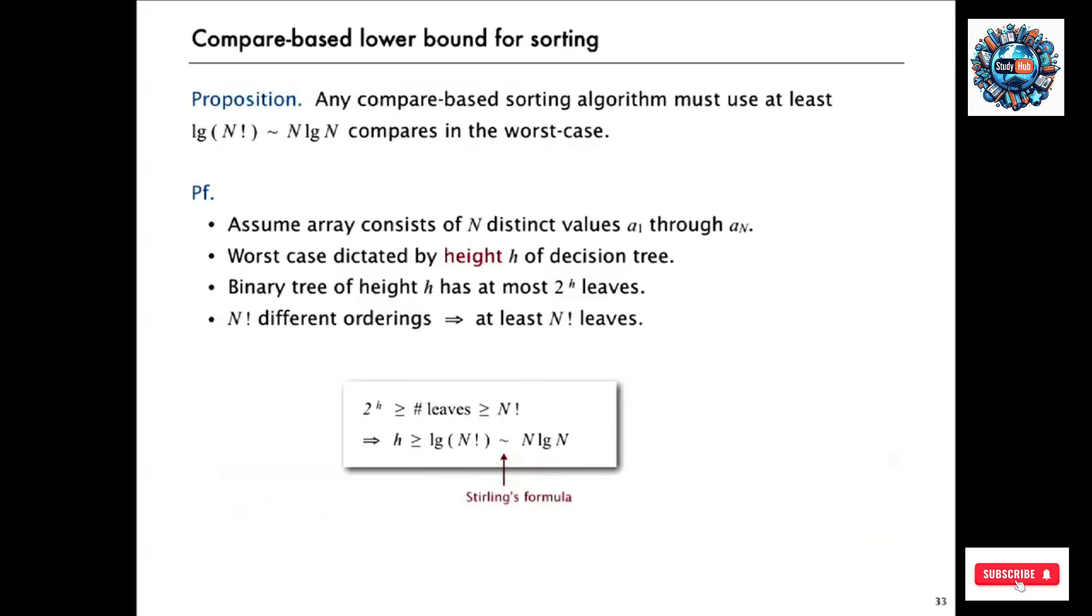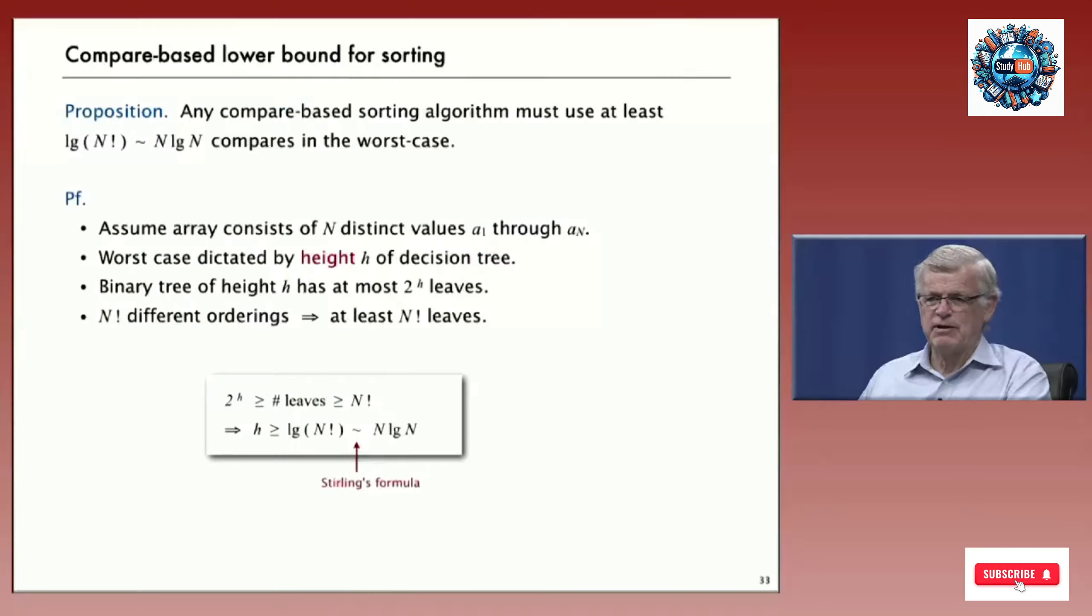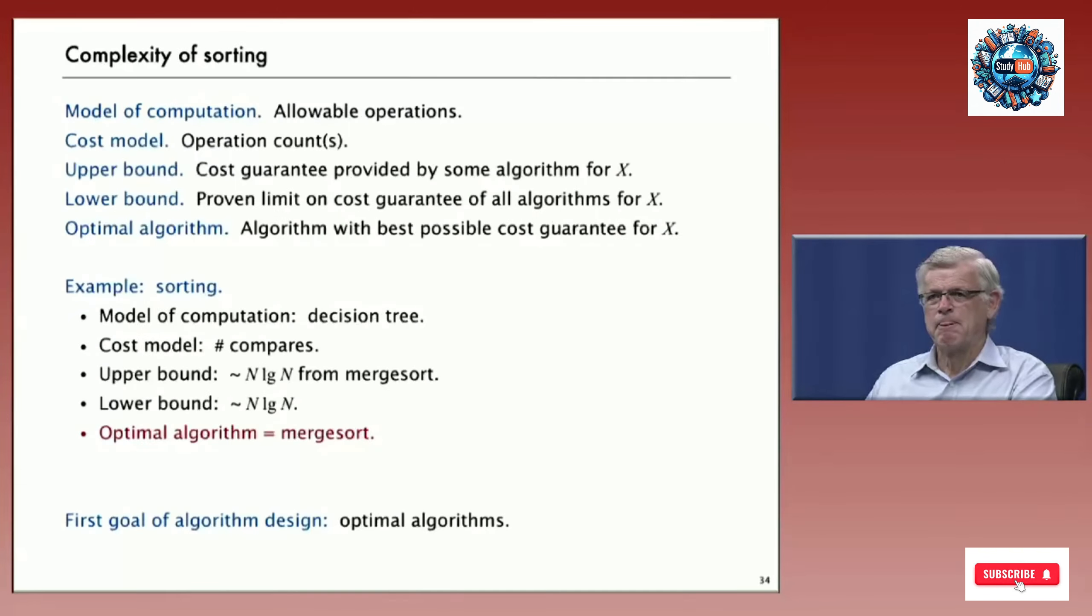And those observations give us the lower bound. 2 to the h has to be greater than or equal to the number of leaves. And the number of leaves has to be greater or equal to N factorial. So that implies the height of the tree has to be greater than or equal to log base 2 of N factorial, which is proportional to N log N by Sterling's formula. That's a lower bound on the complexity of sorting.